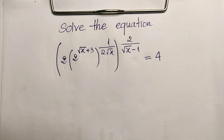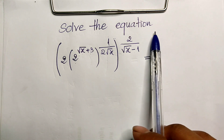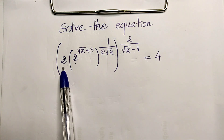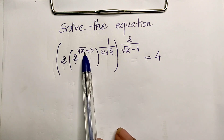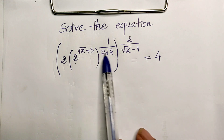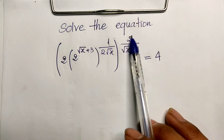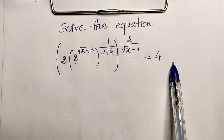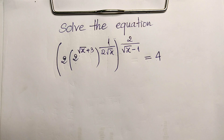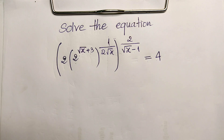Hello everyone, welcome to my YouTube channel. Today I have one exercise — an equation on paper. The equation is: 2 times 2 to the power of (square root of h plus 3) all to the power 1/2, times square root of h, all divided by 2, times square root of h minus 1, equals 4. If you know how to solve this, please try it first, then come back to verify your solution. Before we go to the solution, please don't forget to subscribe to my channel for more exciting videos.